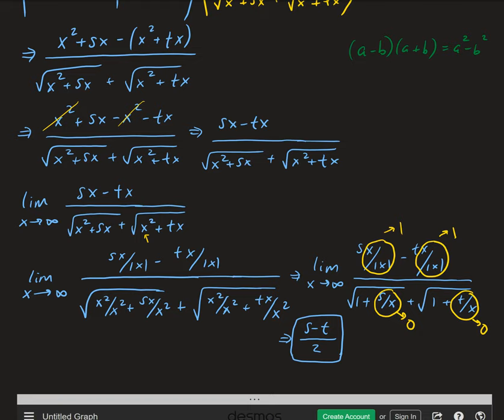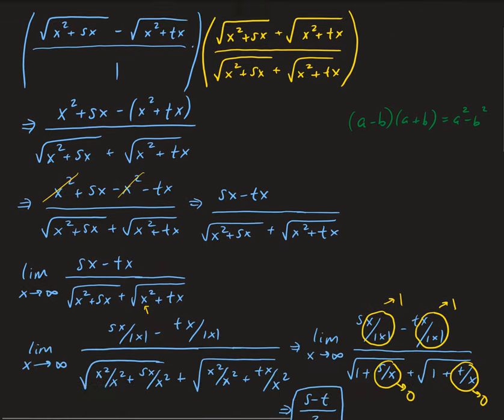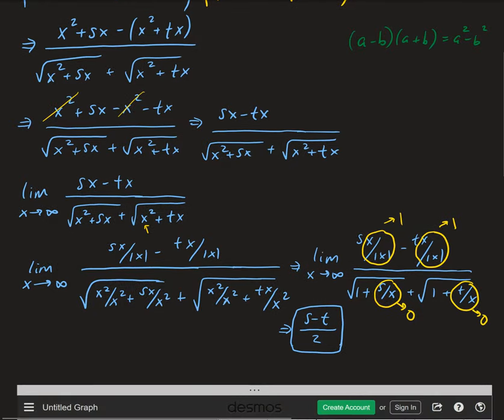So this is the solution to our limit: (s minus t) over 2. The limit depends on s and t. We did this by using the conjugate, then we looked in the denominator for the term with the highest degree and divided each term by it, keeping in mind that when you take that term out from the radical, you have to take the absolute value of it.